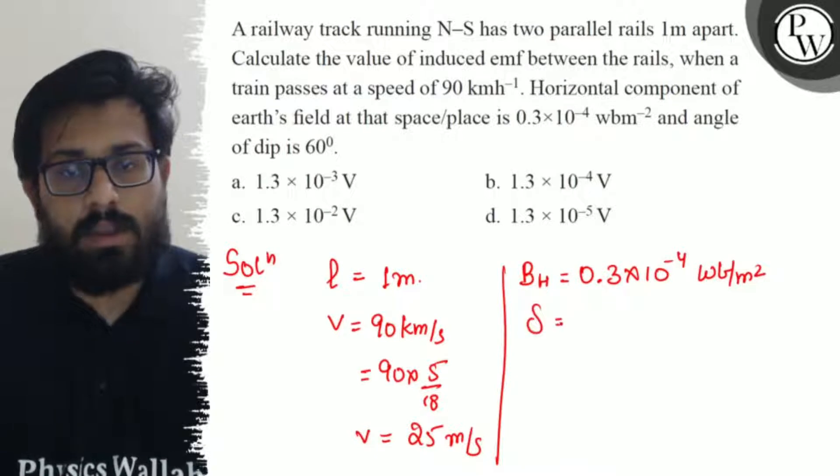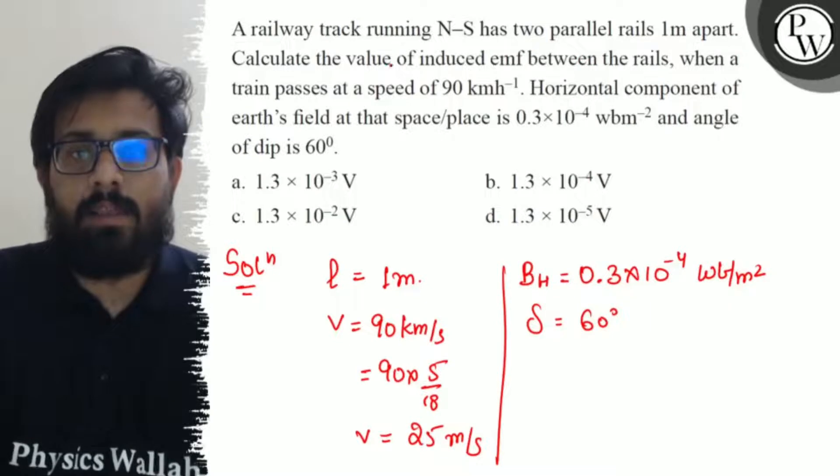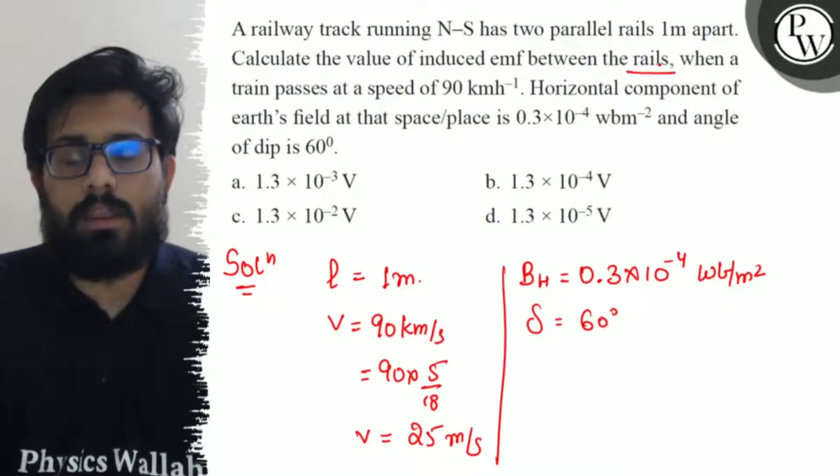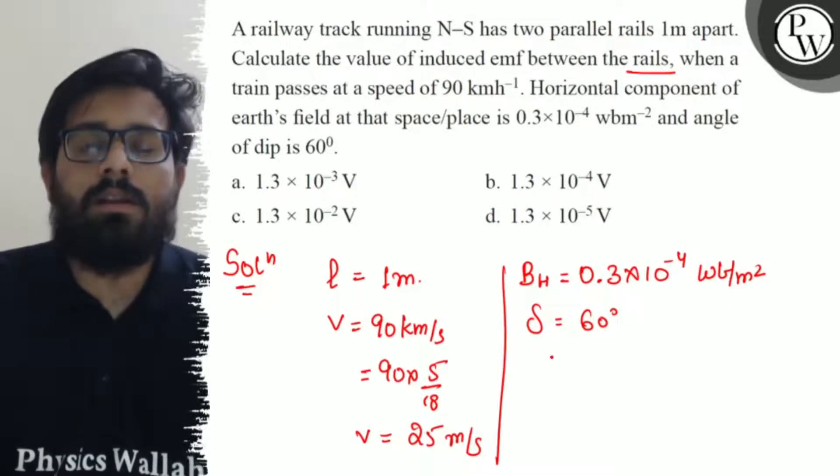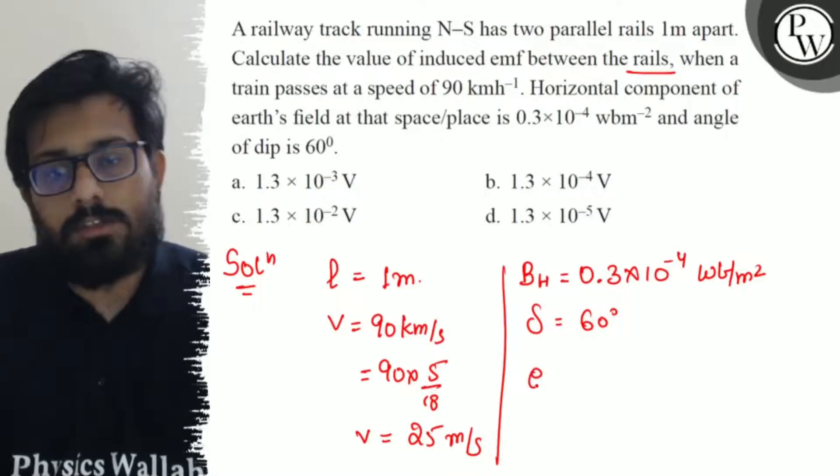And the angle of dip is given as 60 degrees. Now when the train moves, it will cut the vertical component of the magnetic field, Earth's magnetic field. So when we use EMF formula, we use the vertical component to solve the question.